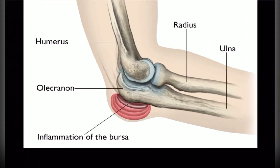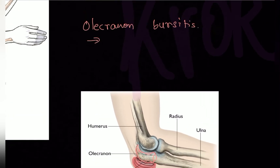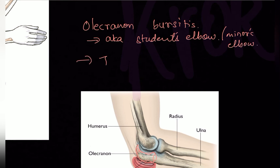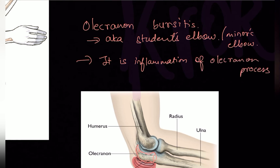Now for a clinical condition: olecranon bursitis. Many students sit with their body weight resting completely on their elbow — for example, lying on a bed while writing, supporting the upper body weight through the elbow. This causes inflammation of the bursa over the olecranon process. Olecranon bursitis is also known as student's elbow, because students sit resting their face in their palms on bench tops, and also as miner's elbow. It is, in summary, inflammation of the olecranon bursa.